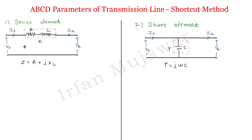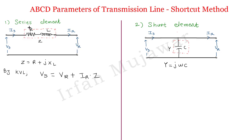Starting with the series element: writing the relation between Vs and Vr using KVL, Vs equals Vr plus the voltage drop across the series impedance, which is Ir into Z. So Vs equals Vr plus Ir·Z. For the second relation between Is and Ir, we can see from the circuit that Is equals Ir.